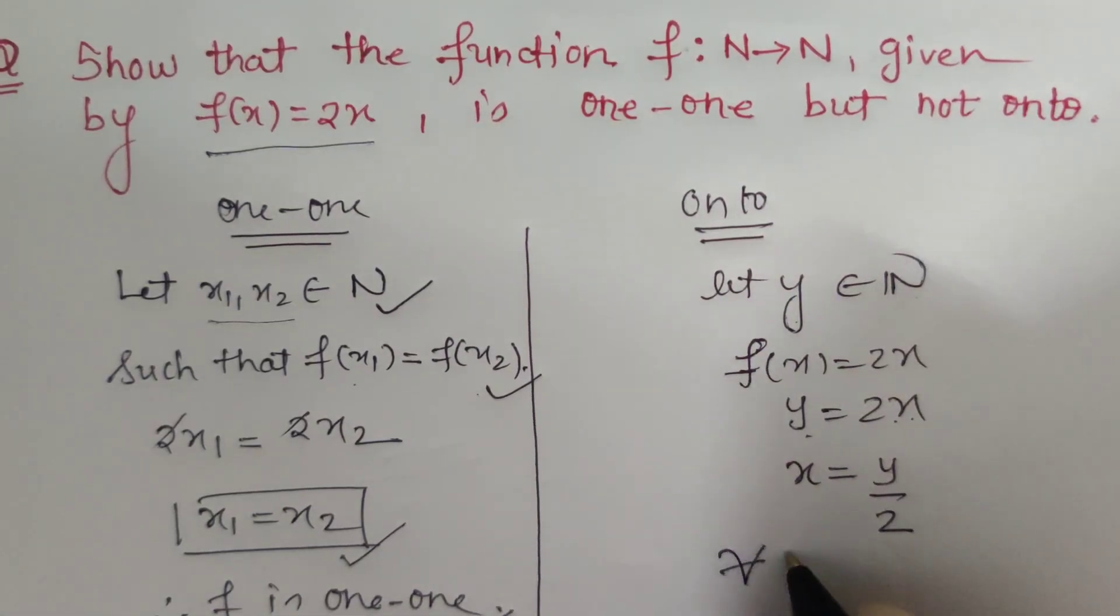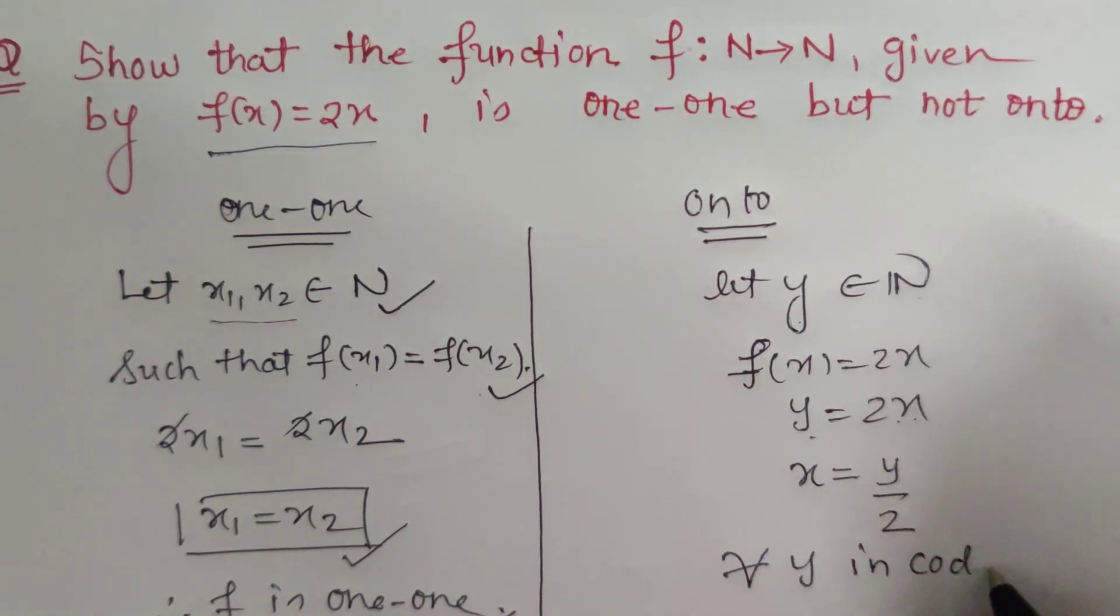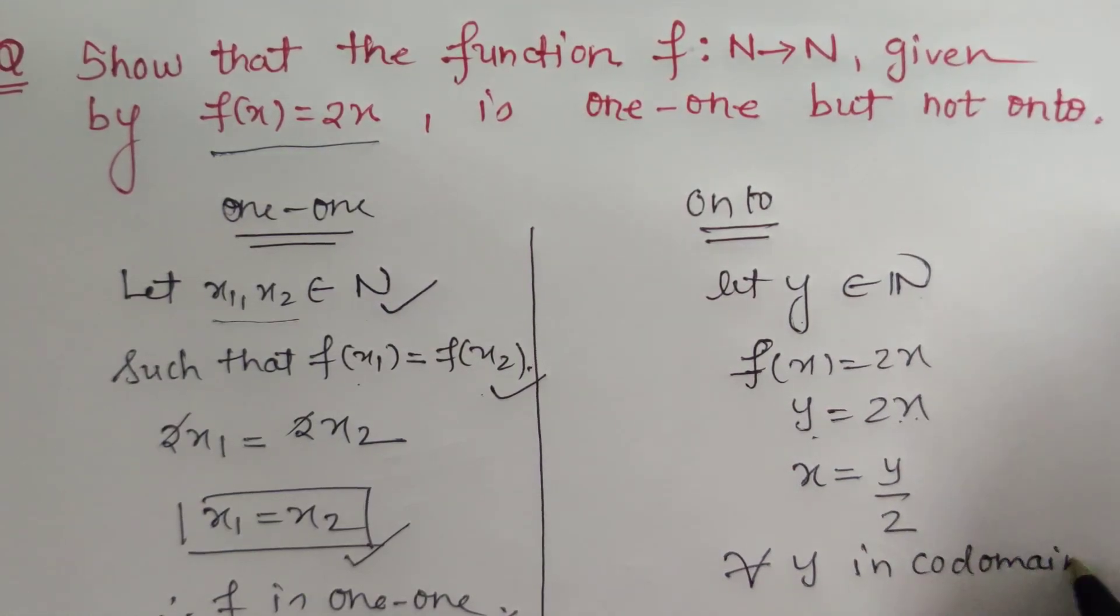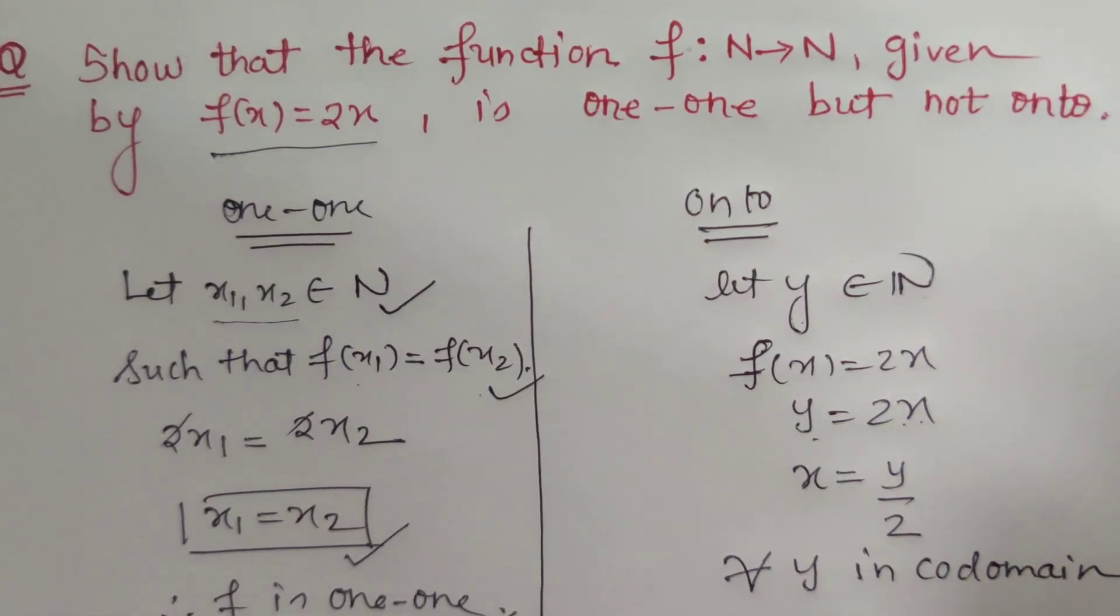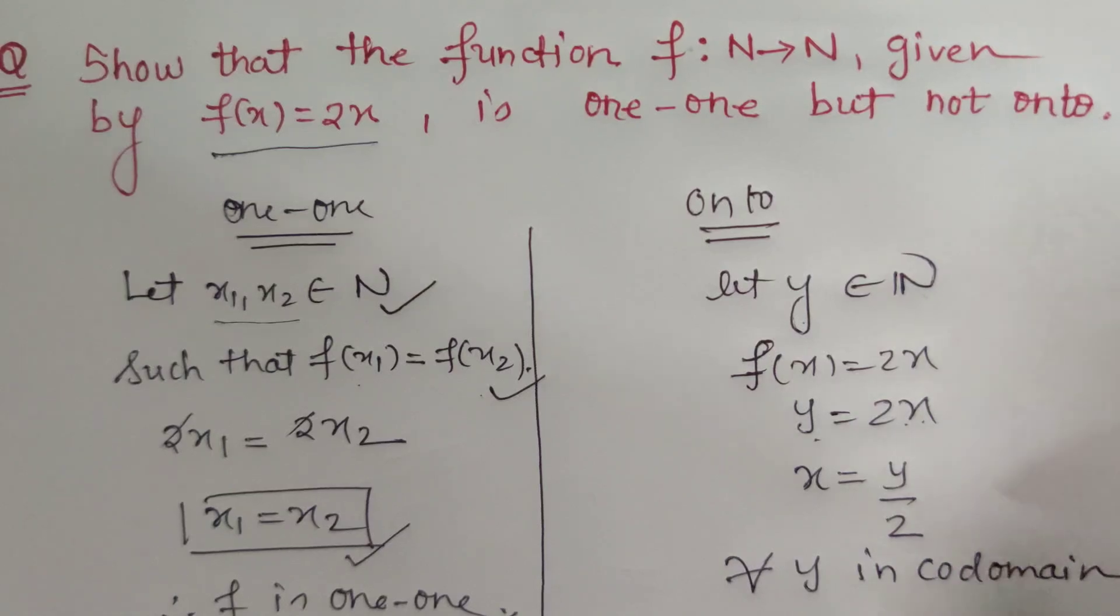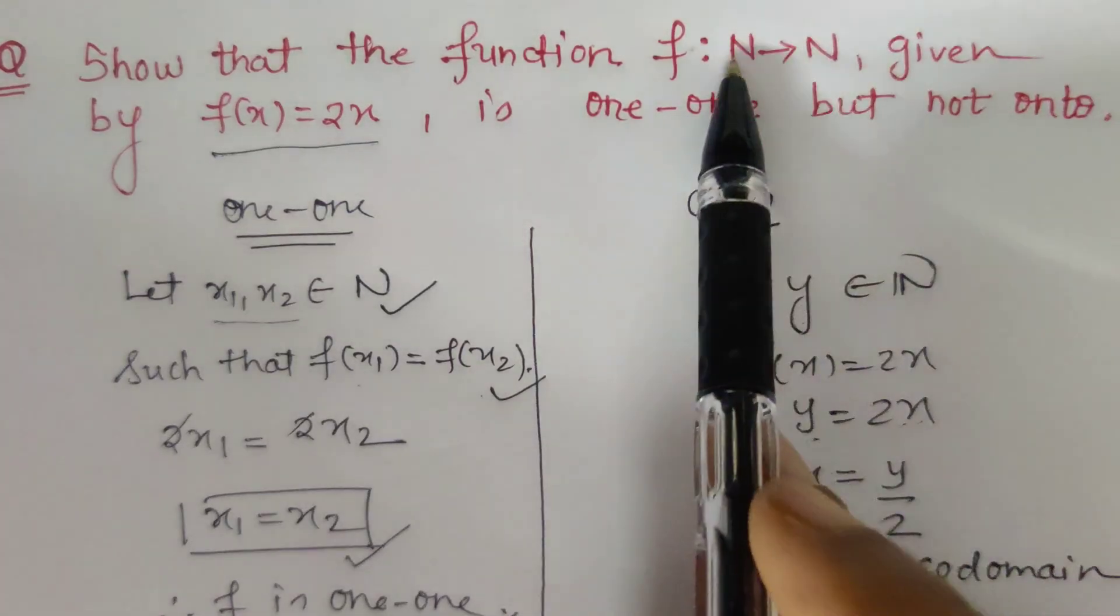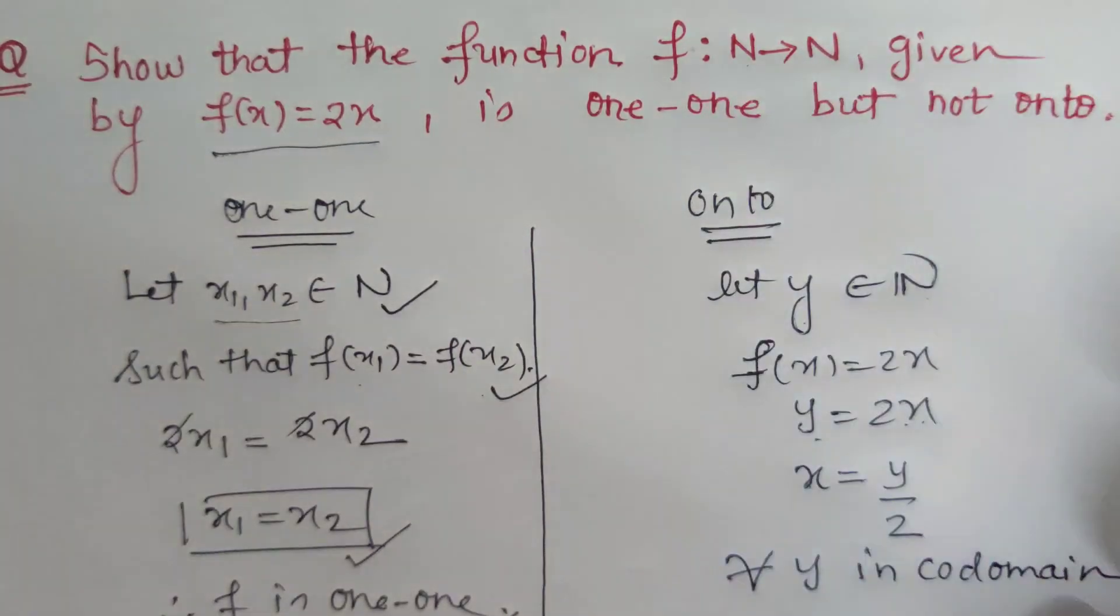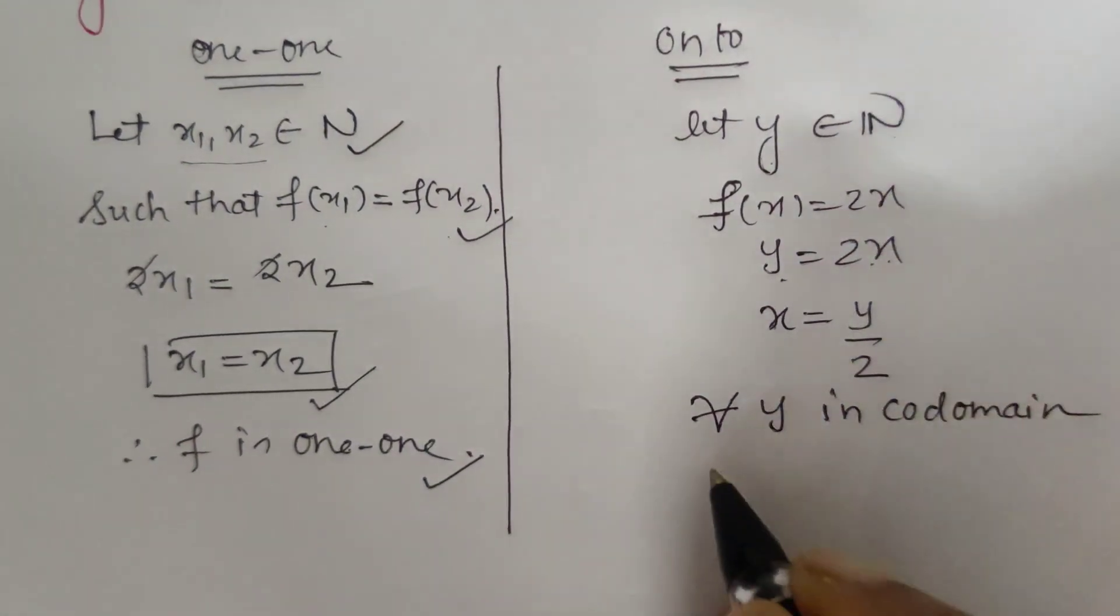Now we have to check that for every y in codomain, there should exist some element in domain which is the pre-image. But if I put y equals 1, then x equals 1/2, which is not in domain because domain is the set of natural numbers. So we conclude: for every y in codomain, there does not exist x in domain.